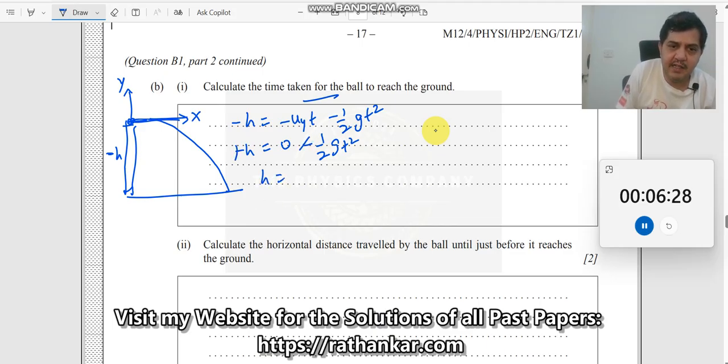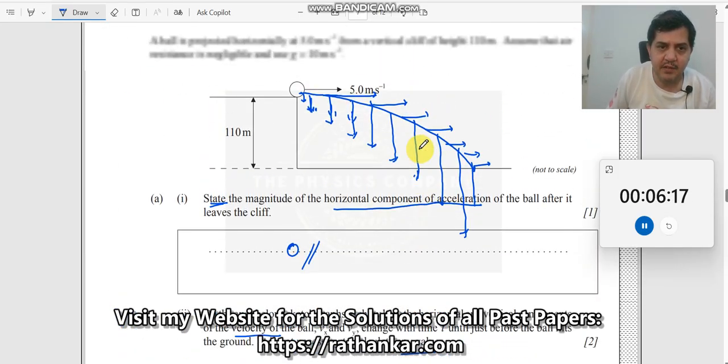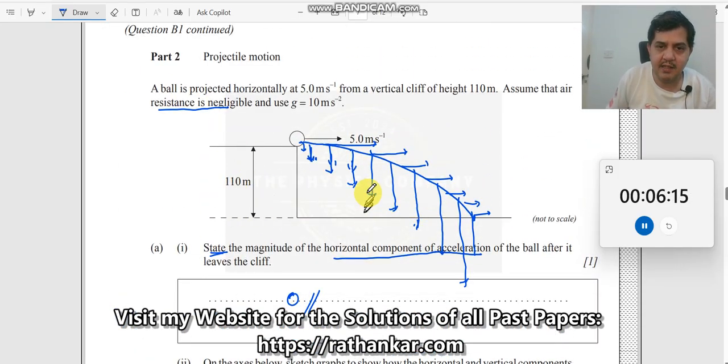Minus h, uy is zero, so minus half g t squared. This is minus h. Negative negative goes away, so I am getting h equals half g t squared. In other words, t should be equal to the square root of 2h by g. Simplify this, you get the answer.